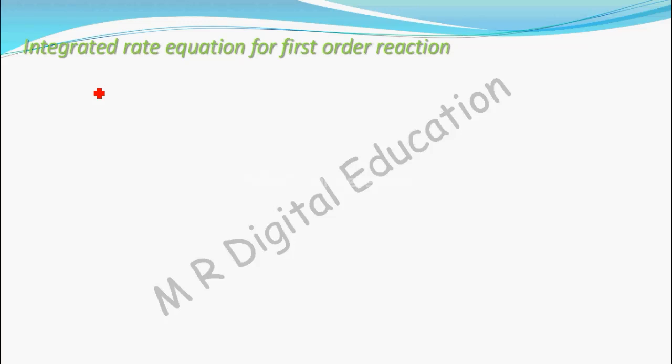Let's see now the integrated rate equation for a first-order reaction. Consider a first-order reaction: reactant R gives product P.